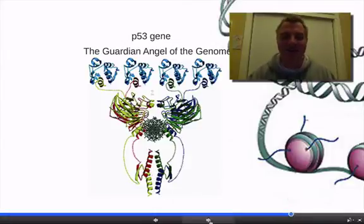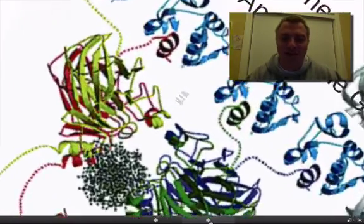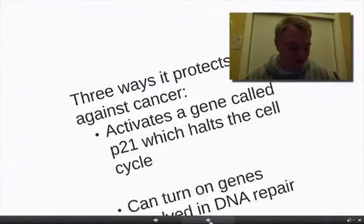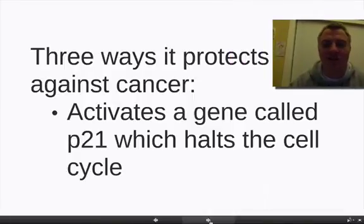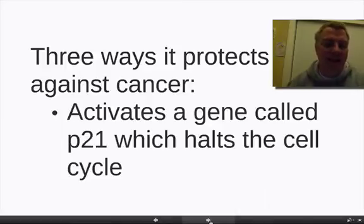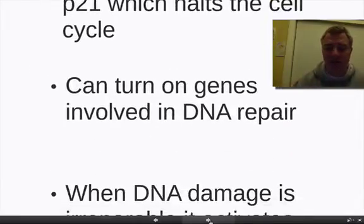There are three ways that the P53 gene protects your cells against cancer. First of all, it can activate a gene called the P21 gene, which will completely halt the cell cycle. And of course, if a gene's out of control with cancer, that will be very beneficial.